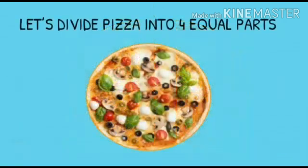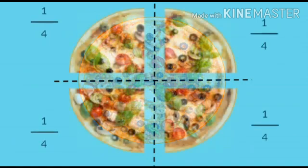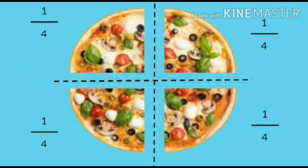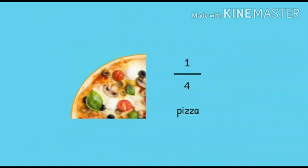Now, let's divide this same pizza into four equal parts. You can see that this pizza is divided into four equal pieces. Thus, we call each of these parts a Fraction of the whole pizza. This is 1 by 4 of the pizza. It means it is one piece out of four equal pieces.